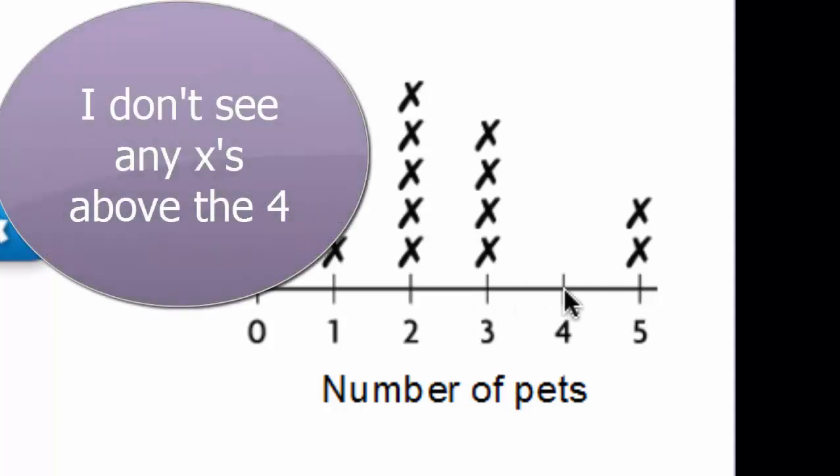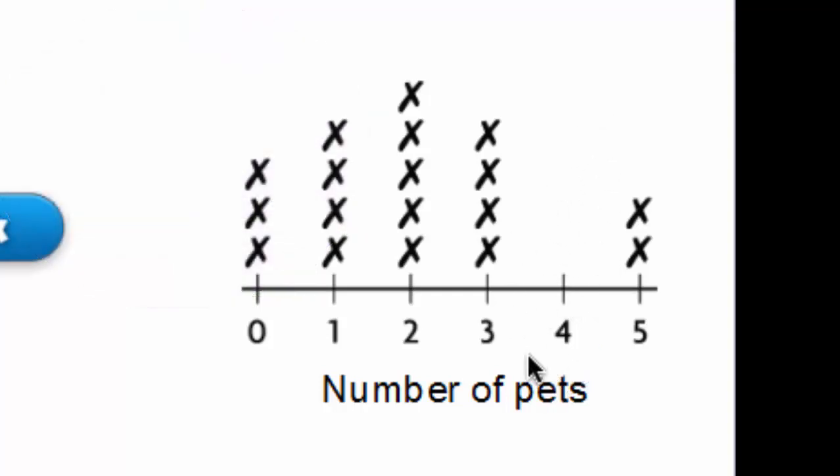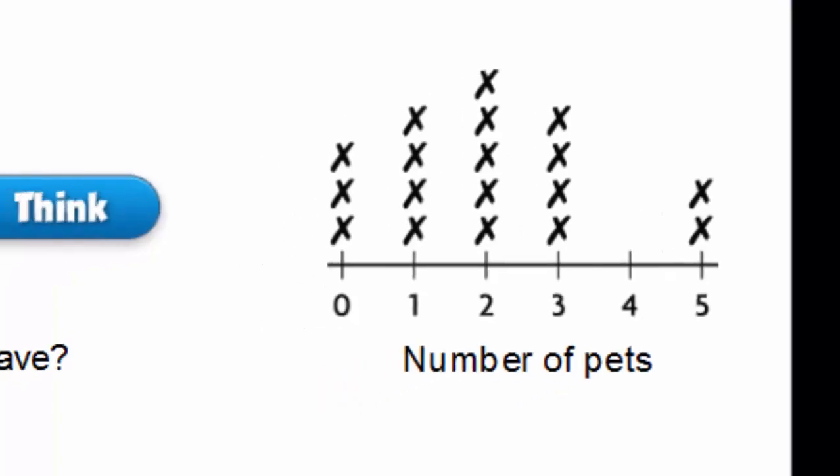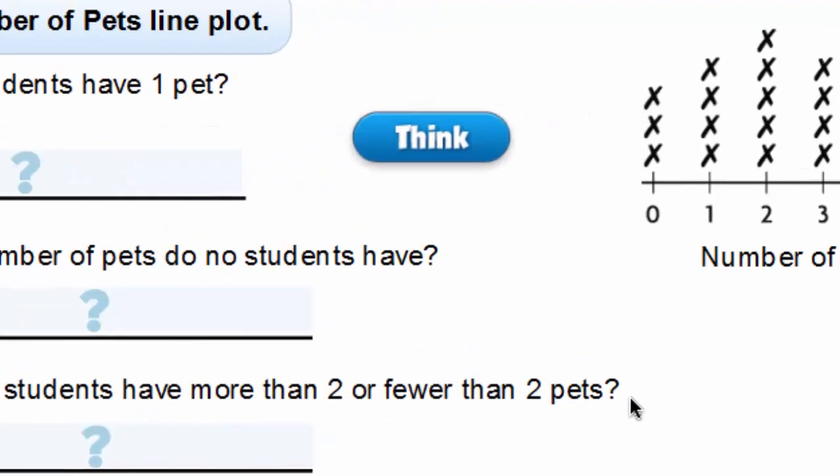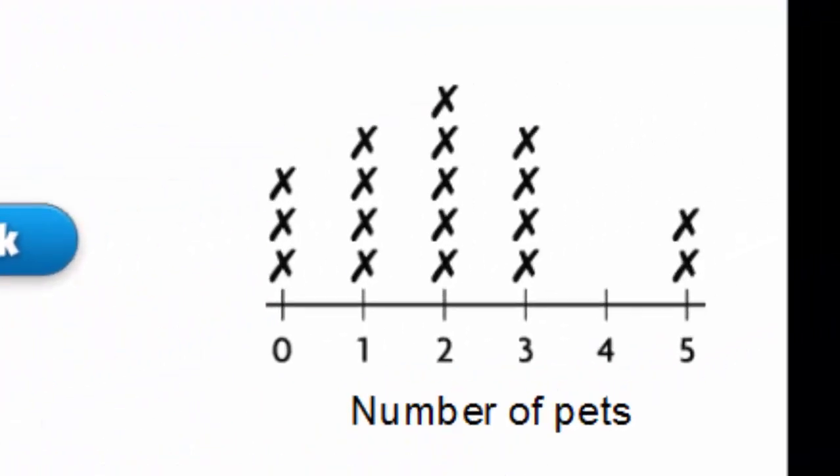The four, right? There are no X's up here, which means there are no students who have four pets. Do more students have more than two or fewer than two pets? So do most of the students have more than two pets or fewer than two pets?